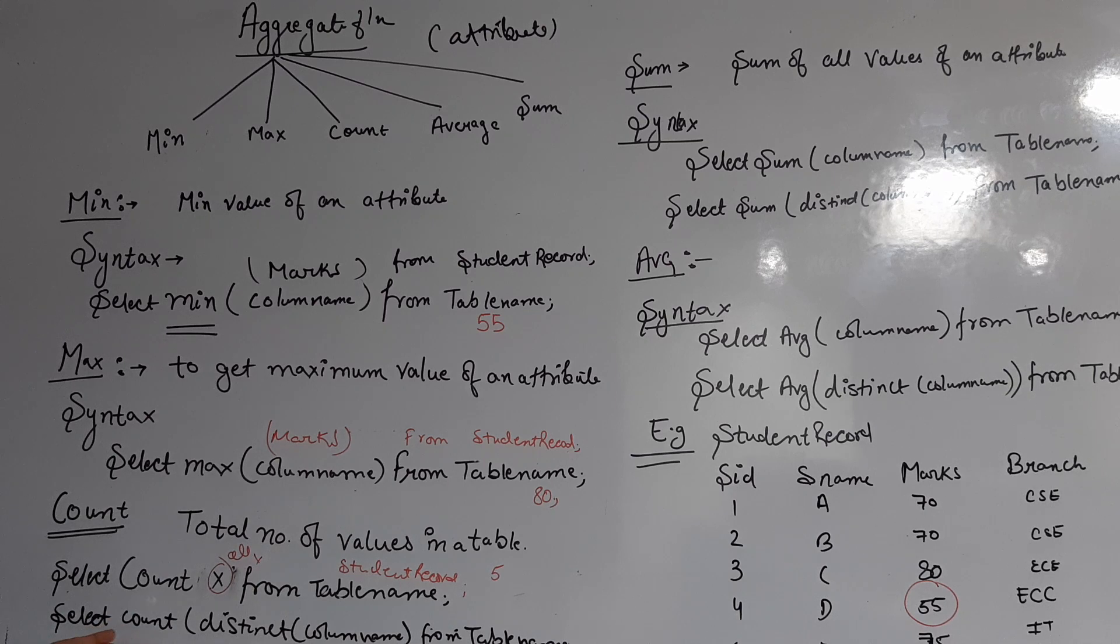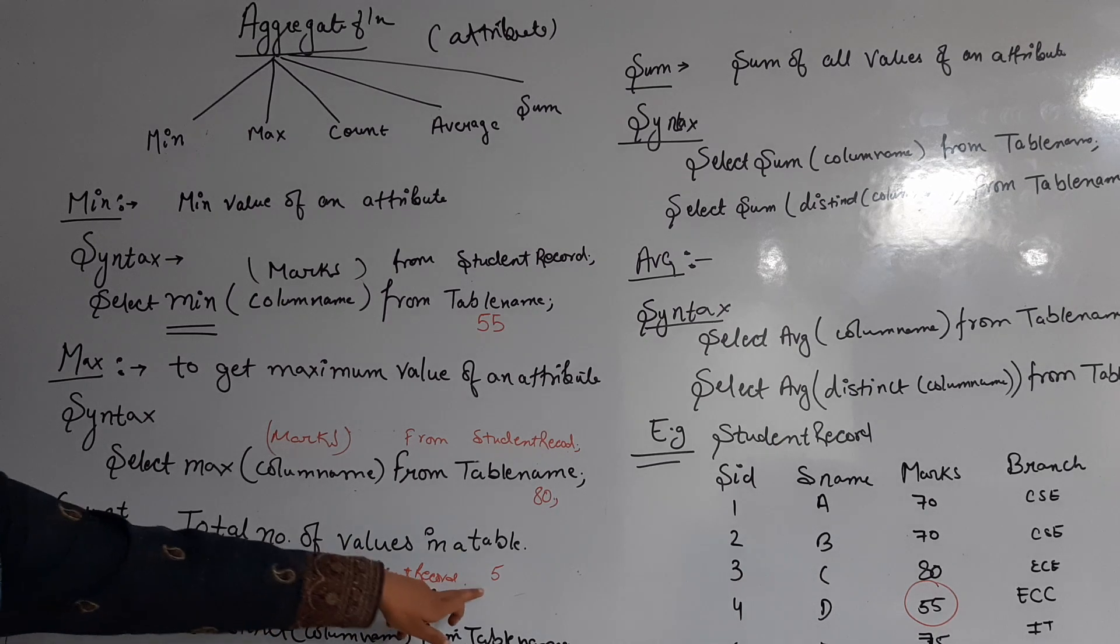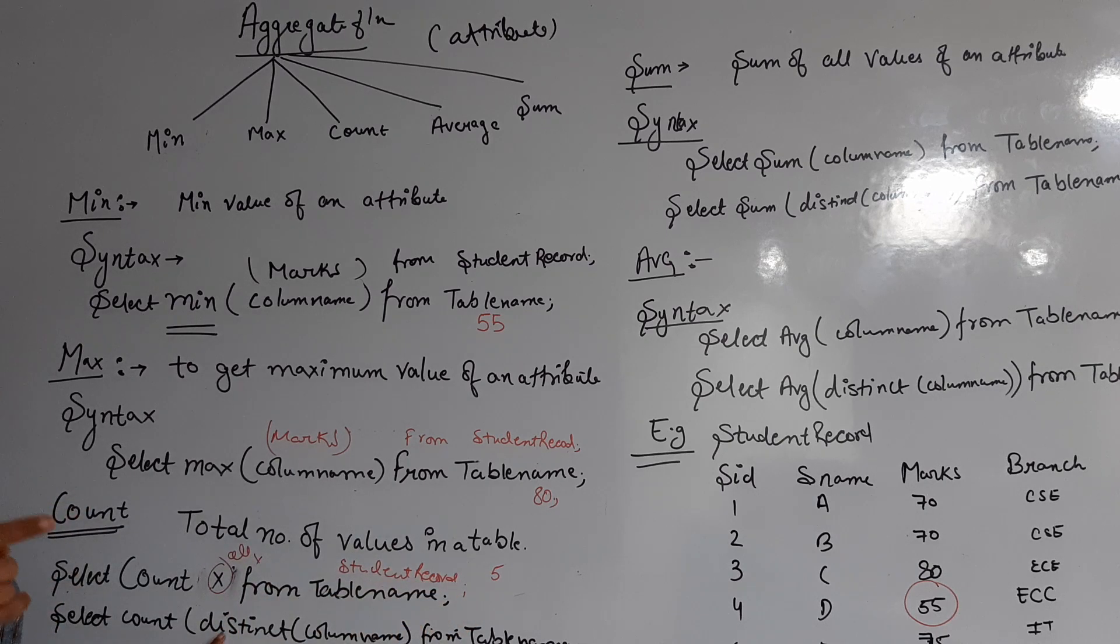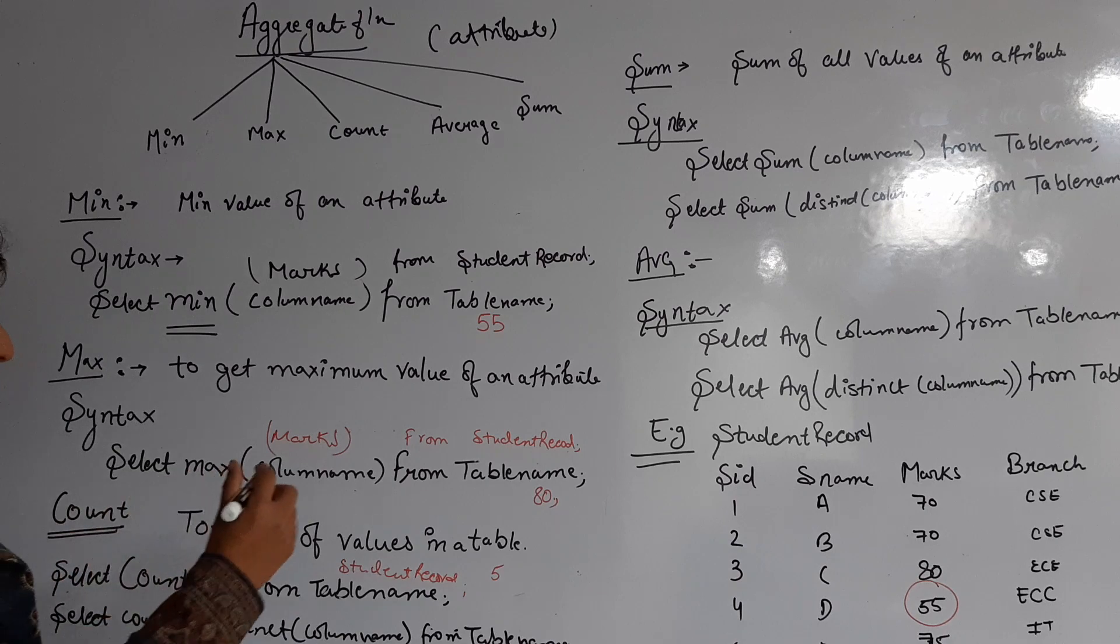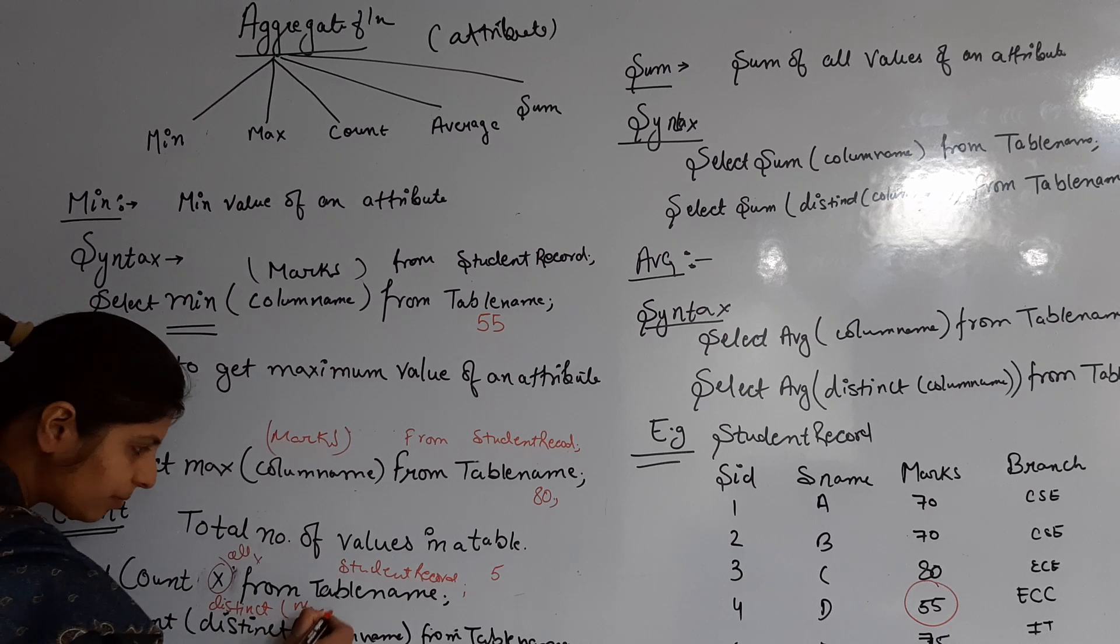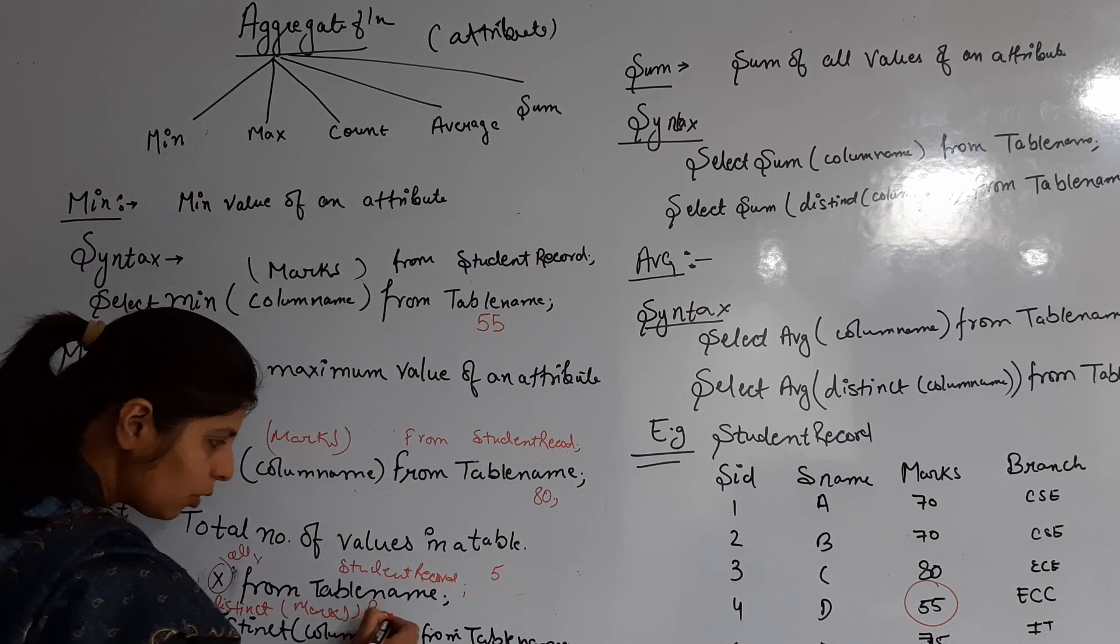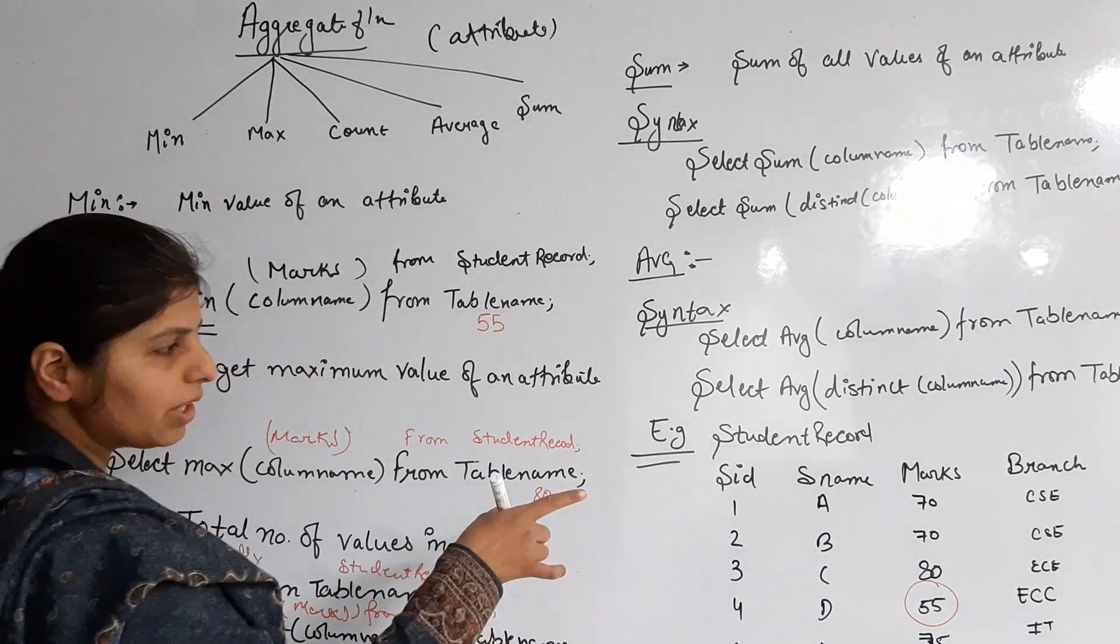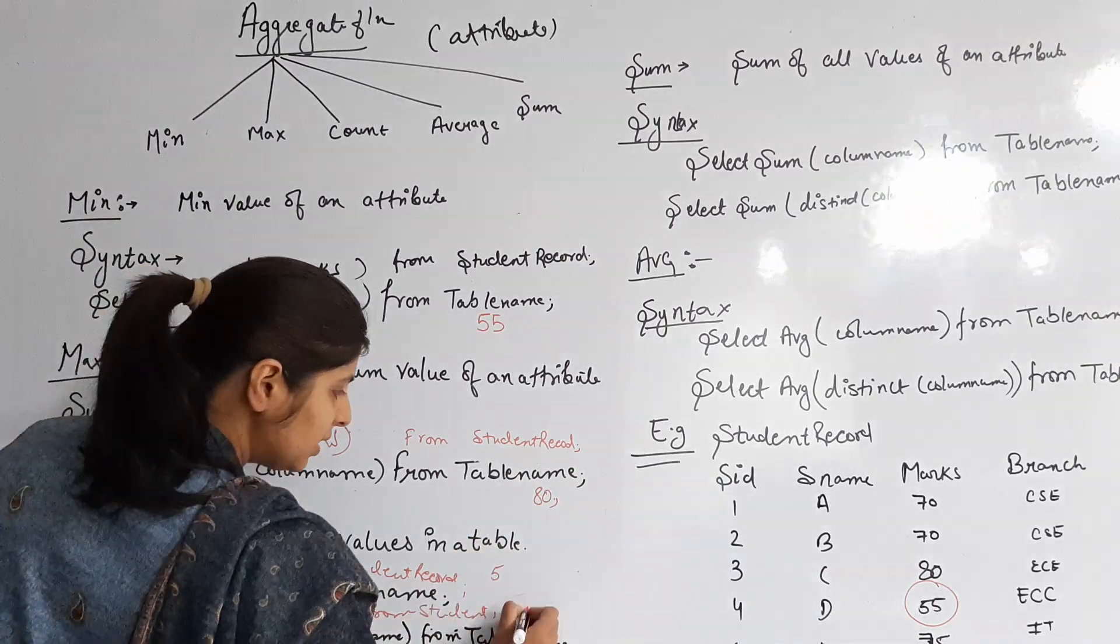If I use DISTINCT with count, then distinct values will come. If I have five records with duplicates, using DISTINCT will give me four unique records. DISTINCT is always used with column name. So I write SELECT COUNT(DISTINCT marks) FROM student_record. What value will come? One, two, three, four - four will come.